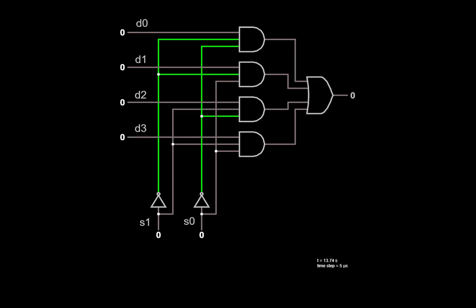Finally, we connect the outputs of the four AND gates to an OR gate so that the selected AND gate passes its output onto the final output of the multiplexer. For example, if the two select lines are 0 and 0, then the output of the top AND gate is passed on to the output of the multiplexer. And if we make the select lines 1 and 0, then the value of D2 is passed on to the output of the multiplexer.